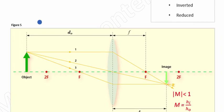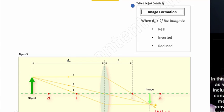Okay, let's go ahead now and summarize this slide for when the object is located beyond two times the focal length. The image is going to be real, inverted, and reduced.